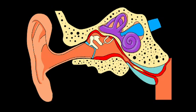If the eustachian tube becomes blocked or swollen, a vacuum of air builds up and the only elastic part of the system, the tympanic membrane, is sucked into the middle ear. The vacuum also causes thickening of the middle ear mucosa, which produces an effusion that fills the middle ear cavity. At first the fluid is thin and watery, but after a few weeks it can become thick and glue-like.